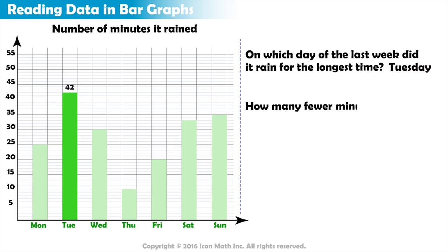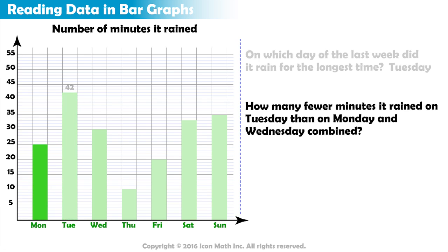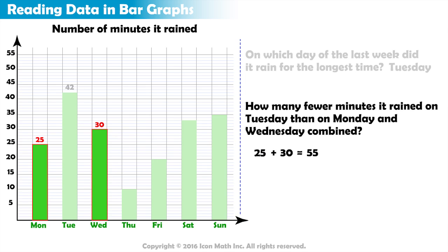How many fewer minutes did it rain on Tuesday than on Monday and Wednesday combined? To make the comparison, first we need to combine the totals for Monday and Wednesday. According to the graph, it rained for 25 minutes on Monday and 30 minutes on Wednesday, so their combined total is 55 minutes.